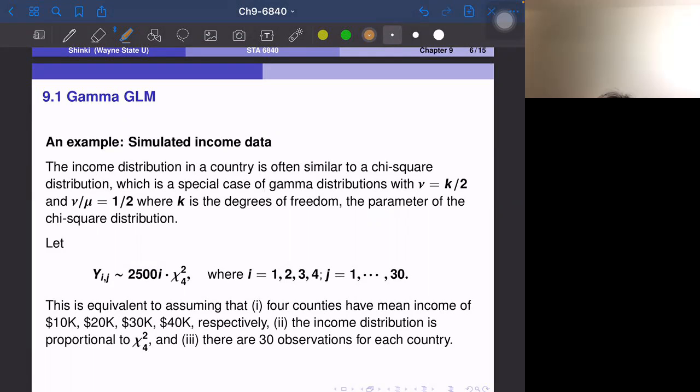So I just created data which is suitable for the Gamma GLM. Think about the income distribution of a country, for example, United States. Notice the very skewed distribution.